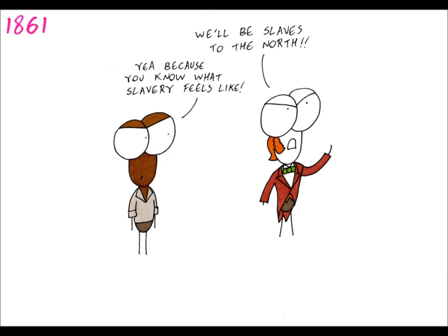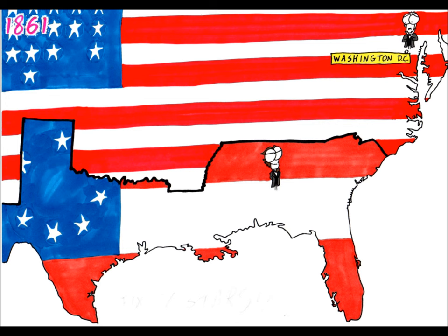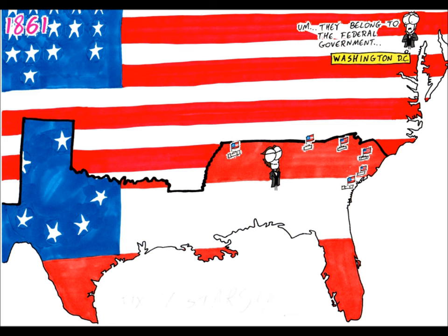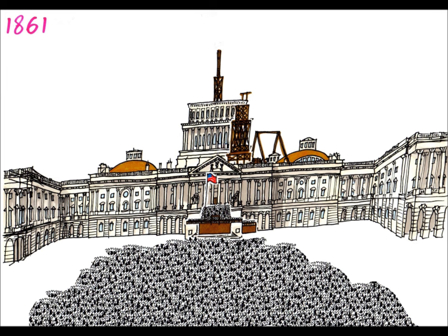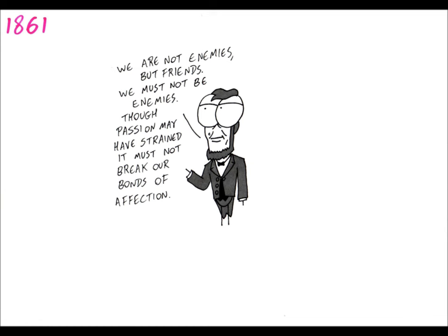James Buchanan, who was still President at this point, didn't want to aggravate the South and start a war, but Confederacy forces began to capture Federal forces in their territories. Lincoln was sworn in as President on March 4th, 1861, and he insisted on the perpetual union, and any secession was legally void.